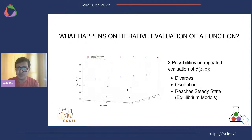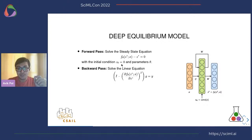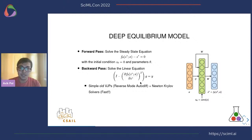This is where the deep equilibrium model comes in. Instead of defining a new explicit model, we say that the output of this equilibrium model must be the steady-state solution of the equation: f of theta, with initial conditions zero and parameters theta. Because of the implicit function theorem, if we differentiate the function, it turns out that in the backward pass we just have to solve a linear equation — we do not need to store any of the intermediate values. We just need one VJP from reverse-mode autodiff, from packages like Zygote, ReverseDiff, or Enzyme, and we can solve the linear equation using any Newton-Krylov method, which is really fast.